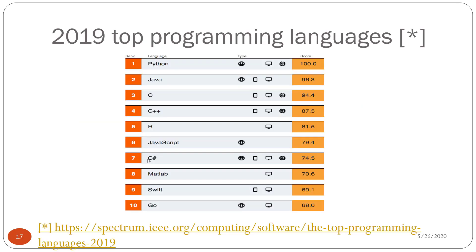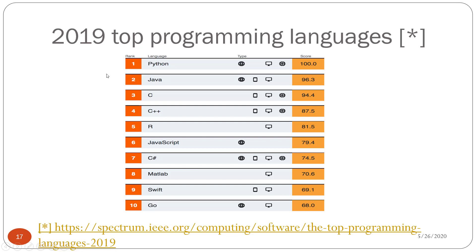According to the top programming language rankings from IEEE Spectrum for 2019, Python is number one with a score of 100, followed by Java, C, C++, and R at fifth place. This should convince us to stick with Python for CSC 351.